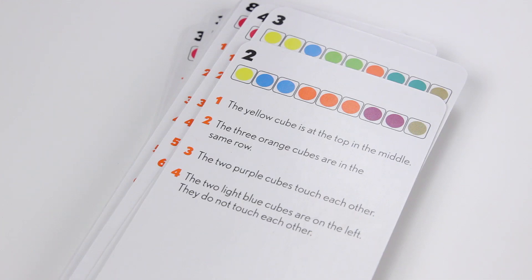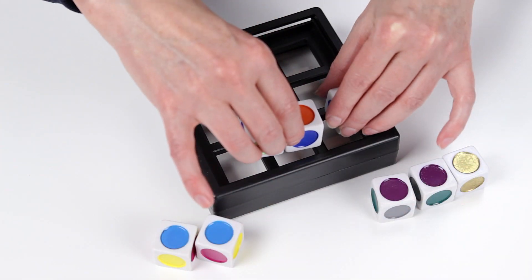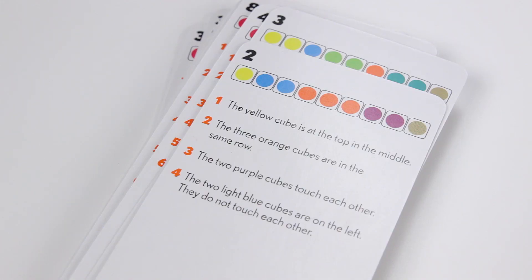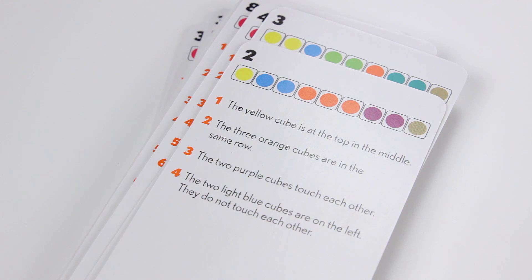Clue number two, the three orange cubes are in the same row. So they could go in this row. Let me read three and four. The two purple cubes touch each other, but the two light blue cubes are on the left and do not touch each other.